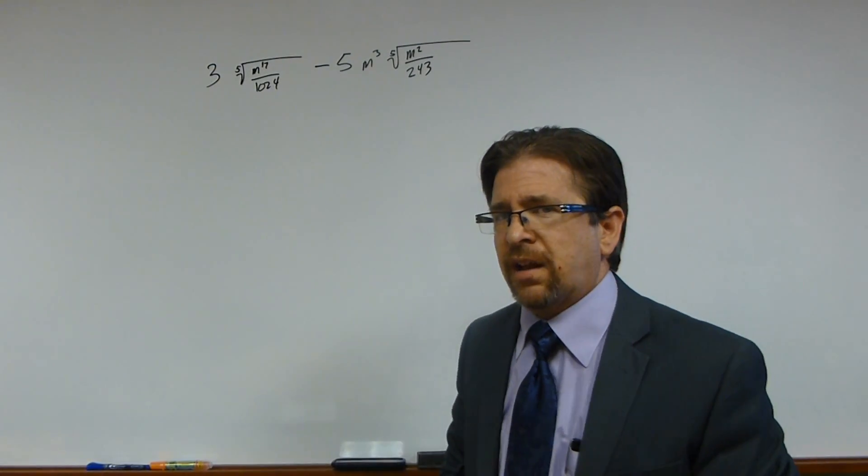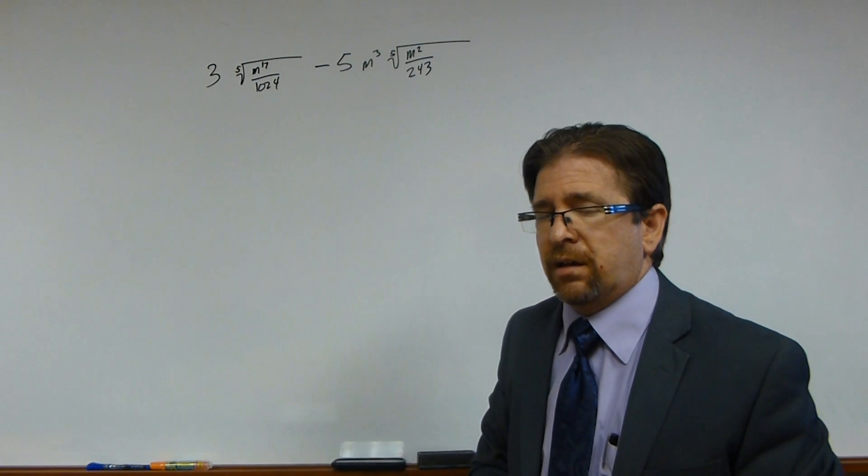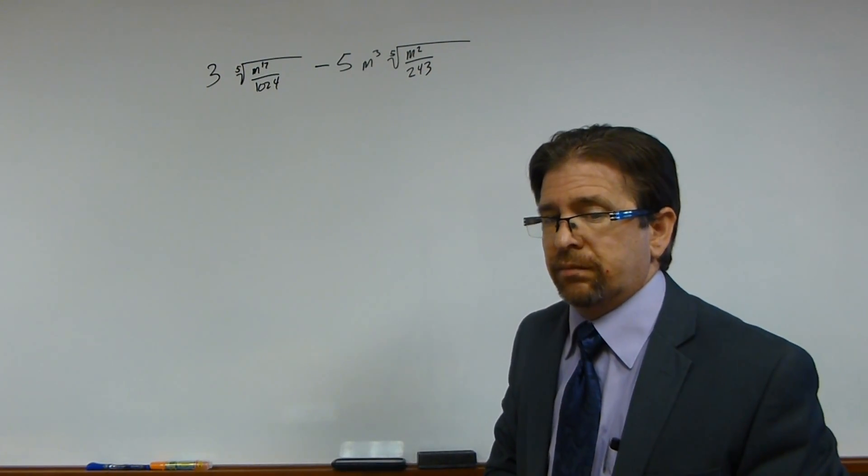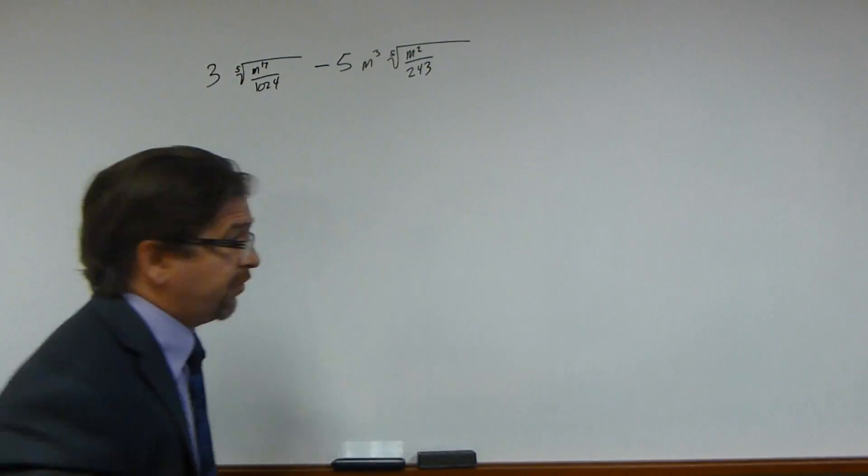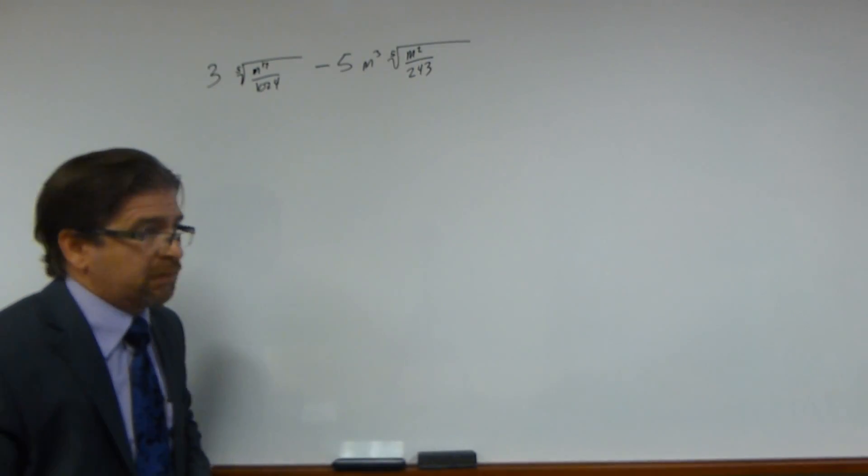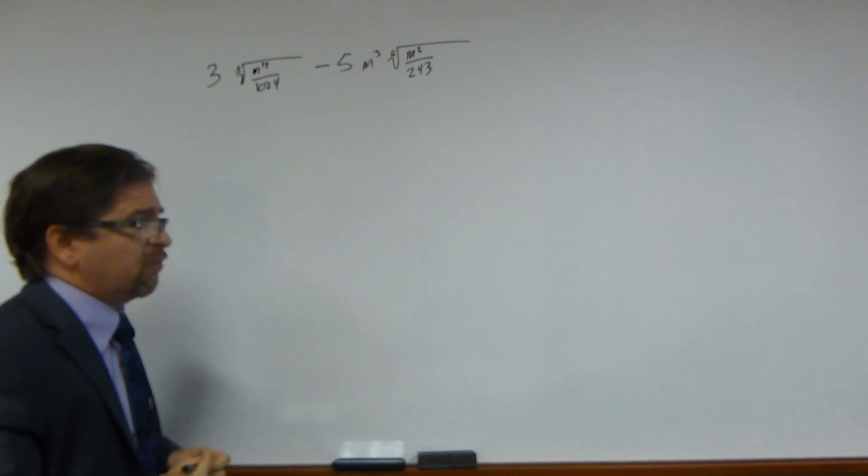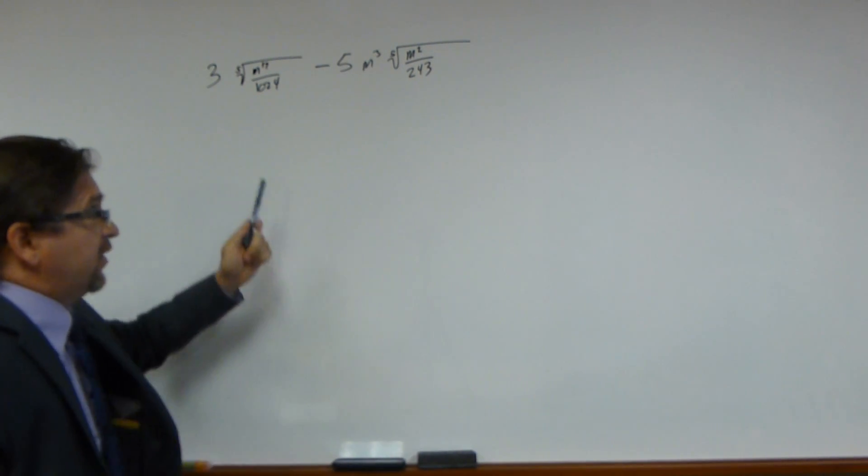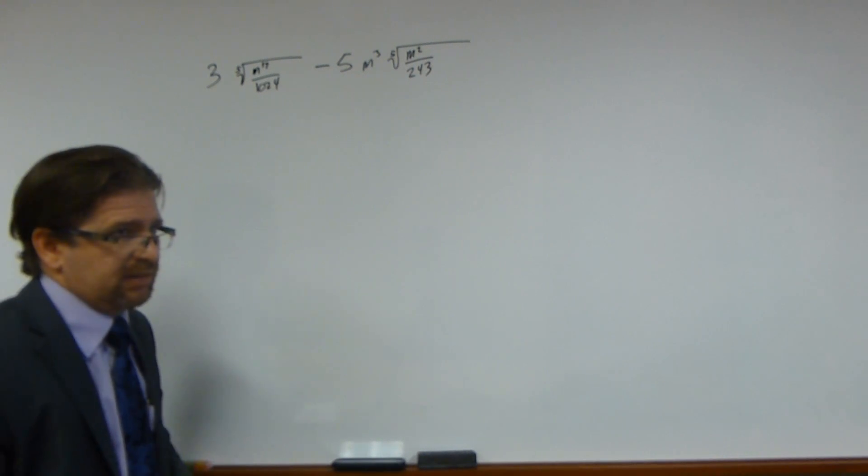In this problem, we're going to look at how to simplify a complex radical, rather a complicated radical. In this case, we have a fifth root that wants us to simplify. The trick to remember these problems is to remember that these higher roots are rational exponents.